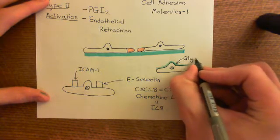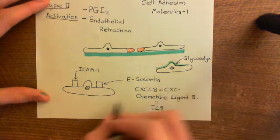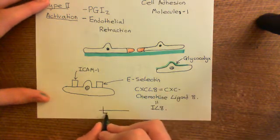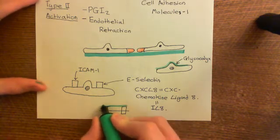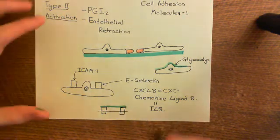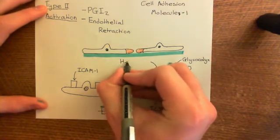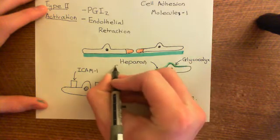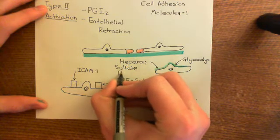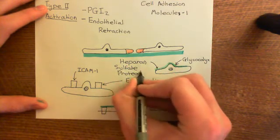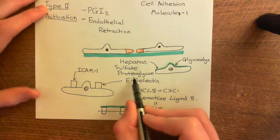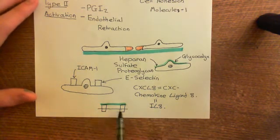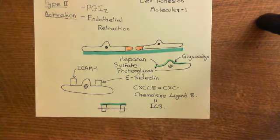The polysaccharides of the glycocalyx are attached to integral membrane proteins on the cell surface. One of the key polysaccharides within the glycocalyx is heparan sulfate, often referred to as heparan sulfate proteoglycan. The term 'proteoglycan' tells you it is a polysaccharide — that's what 'glycan' means — attached to proteins, which is what 'proteo' means. Heparan sulfate proteoglycans are one of the key components of the glycocalyx.